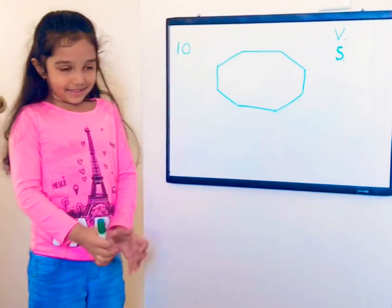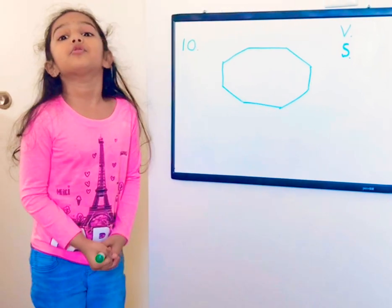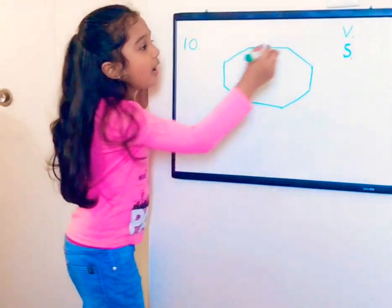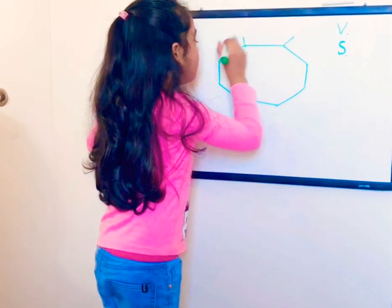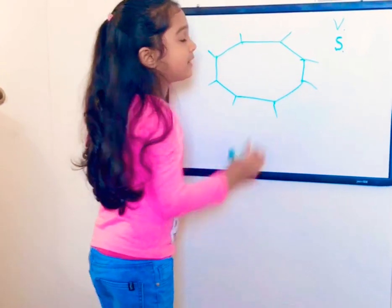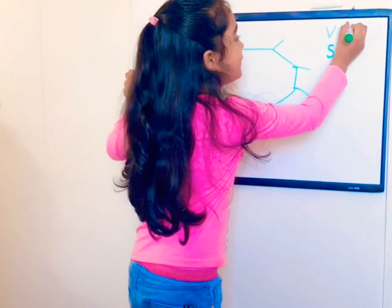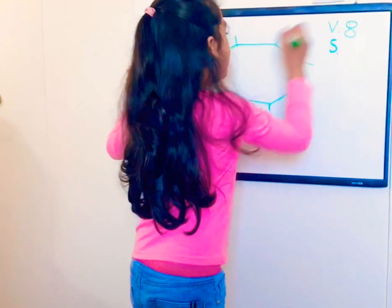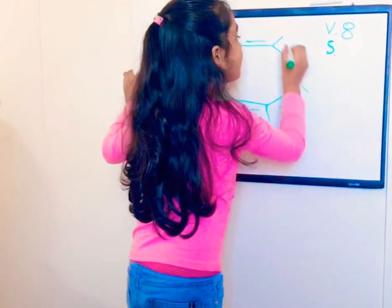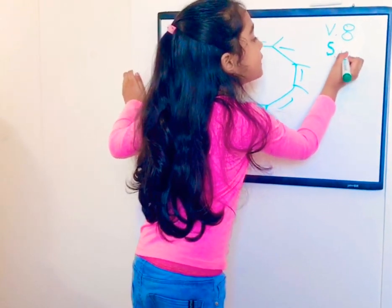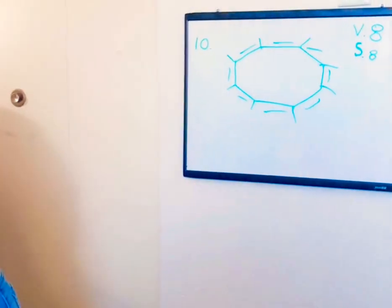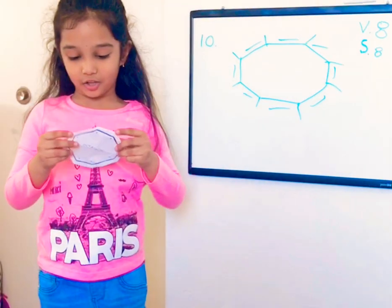Next is octagon. Let's count the octagon's vertices and sides. One, two, three, four, five, six, seven, eight — it has eight vertices. And one, two, three, four, five, six, seven, eight — it has eight sides too. This shape is an octagon.